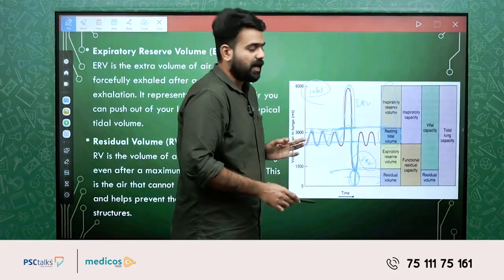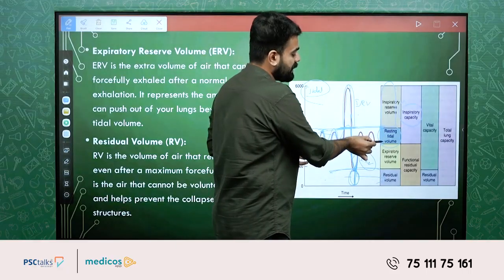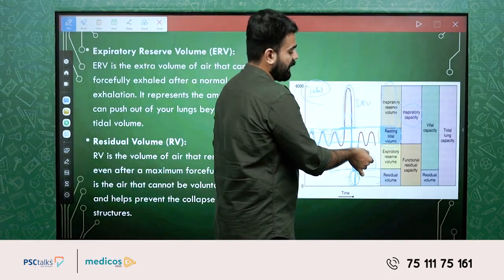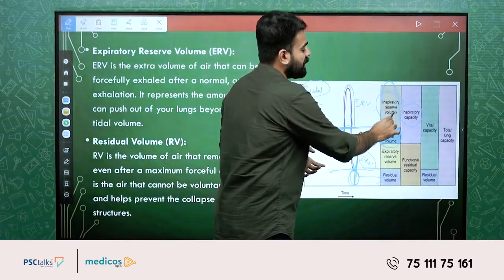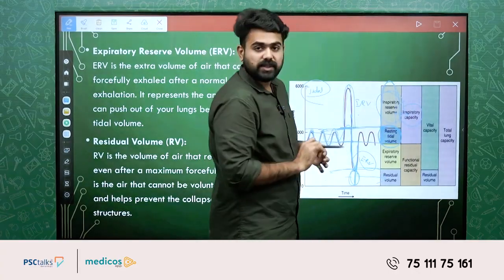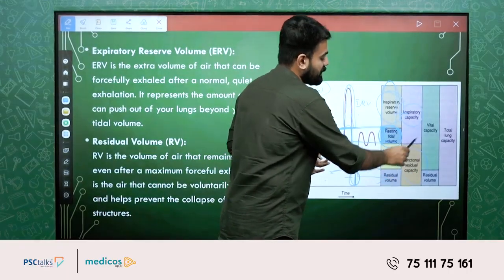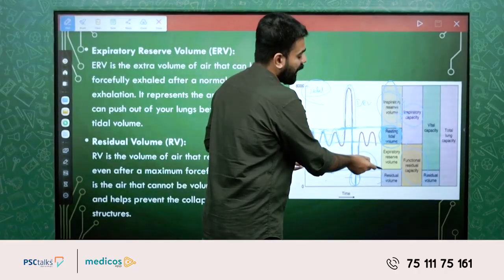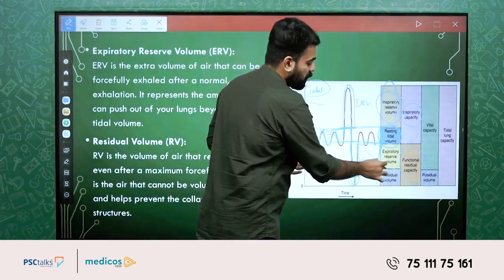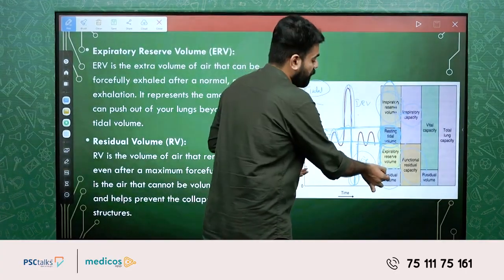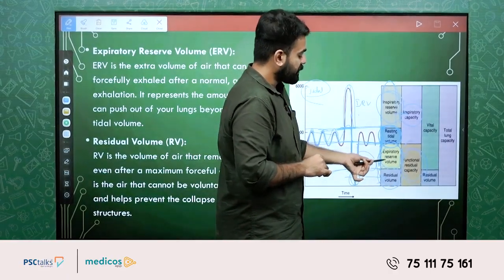Now we have the inspiratory capacity. What is the inspiratory capacity? The normal inspiration amount — that means tidal volume — plus the maximum amount of air that can be inhaled — that means tidal volume plus inspiratory reserve volume — makes the inspiratory capacity. Now for the functional residual capacity: after normal expiration, the expiratory reserve volume plus the residual volume gives the functional residual capacity. So FRC = ERV + RV.